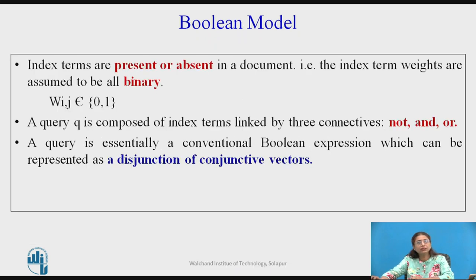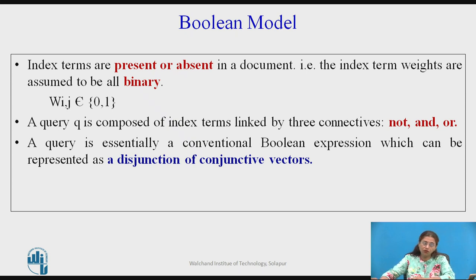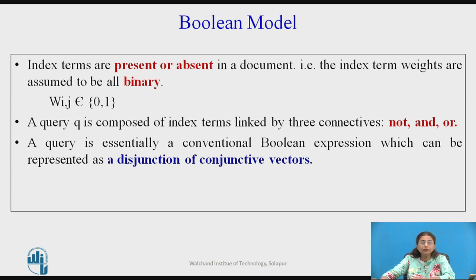How is the framework defined in the Boolean model? The index terms are considered as present or absent in a document — that is, index term weights are binary: 0 or 1. A query is composed of index terms connected by three connectives: AND, OR, and NOT. The query, essentially a conventional Boolean expression, will be represented as a disjunction of conjunctive vectors.